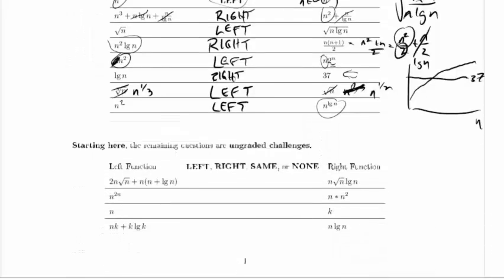So now we're moving on to ungraded challenges, but we're doing it the same way. 2n square root of n plus n times n plus log n versus n square root of n log n. But let's do some multiplying out. So this one on the left here, that's 2n root n plus n squared and then plus n log n.